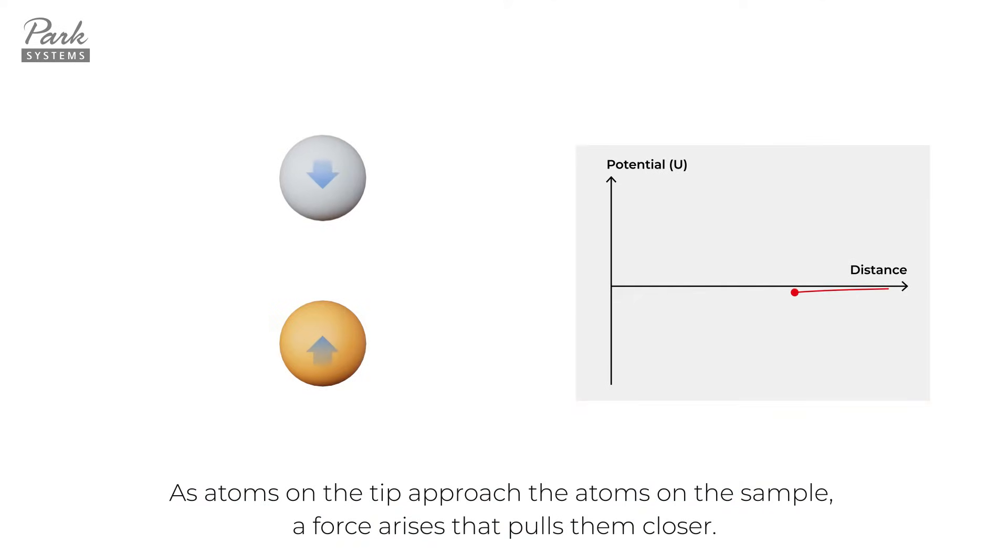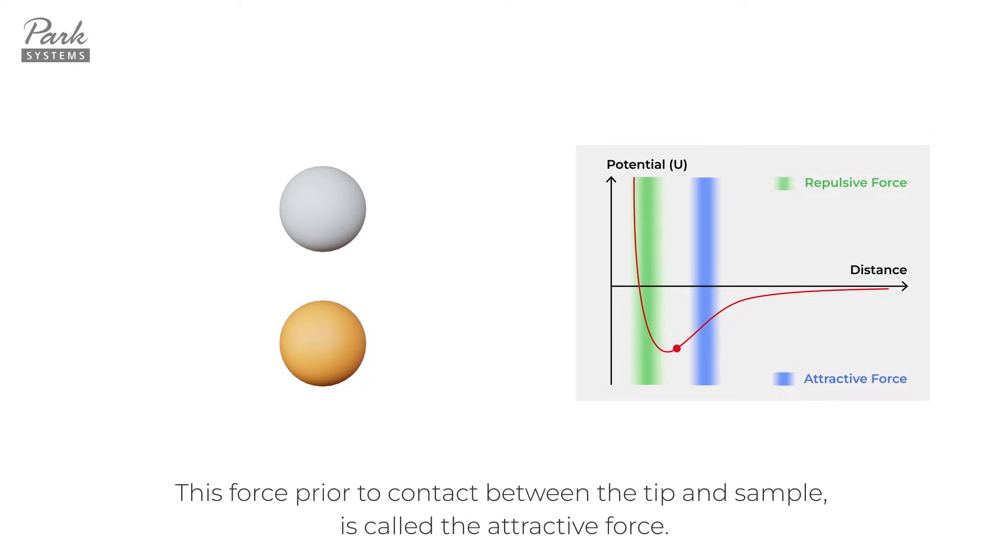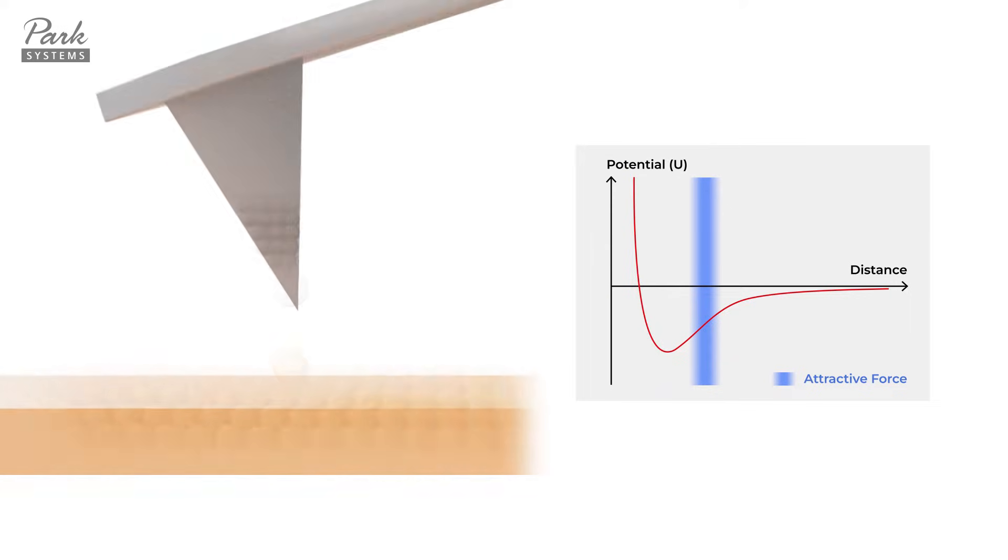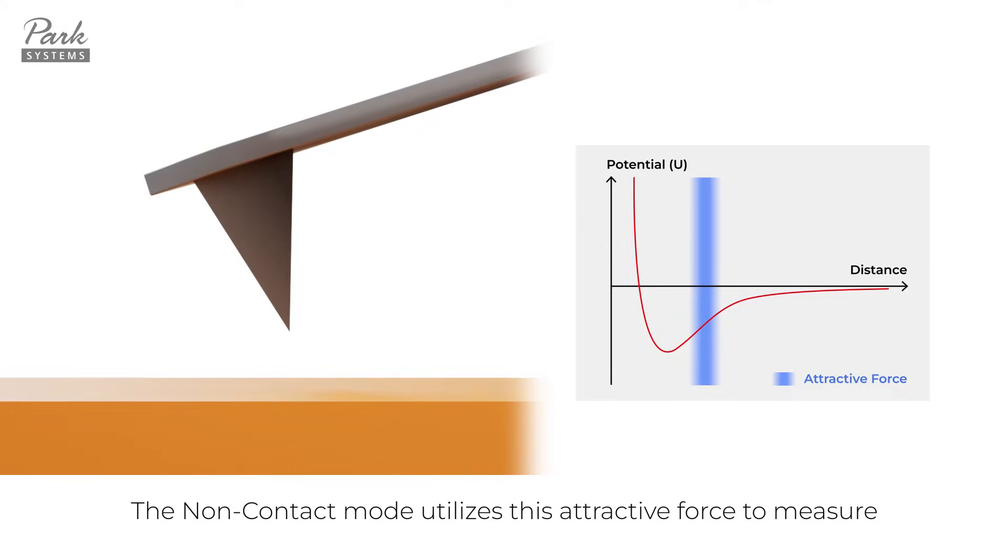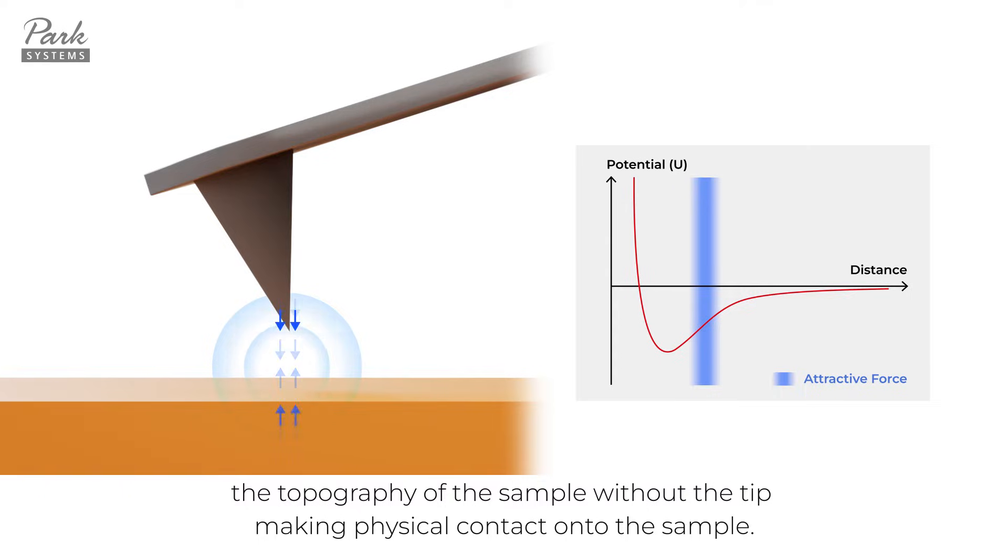As atoms on the tip approach the atoms on the sample, a force arises that pulls them closer. This force prior to contact between the tip and sample is called the attractive force. The non-contact mode utilizes this attractive force to measure the topography of the sample without the tip making physical contact onto the sample.